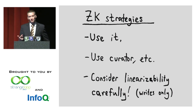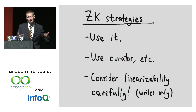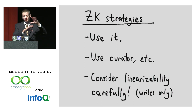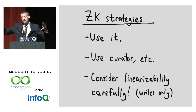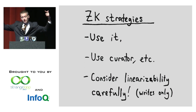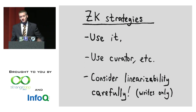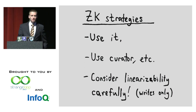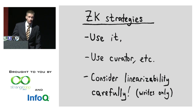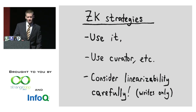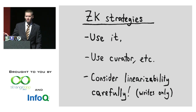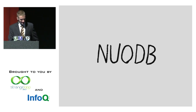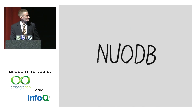Because ZooKeeper's linearizability properties are a bit complicated — it guarantees sessions are linearizable but you have no guarantees about what other node sessions have seen — one node might be much further behind. That means you should use existing recipes like those in Curator to do things like leader election and other ZooKeeper-y things.